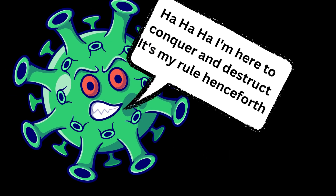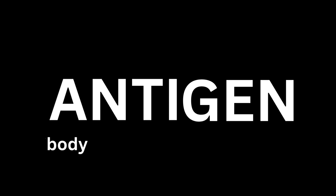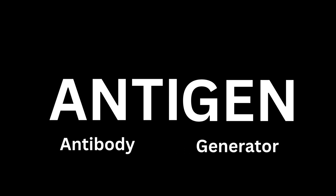Pathogens are foreign organisms that invade into the human body and they cause trouble. Antigens, on the other hand, are a part of the pathogen and they help the immune system to identify the pathogen. If you break the word antigen into 'anti' and 'gen', it's an antibody generator.